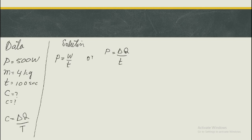ہمیں specific heat capacity اور heat capacity کی value چاہیے۔ ان کو find کرنے کے لئے سب سے زیادہ ضروری value ہے delta q۔ Delta q کو ہم formula c = delta q / t سے find کریں گے، تو پہلے ہمیں delta q یعنی total heat کی value نکالنی ہوگی۔